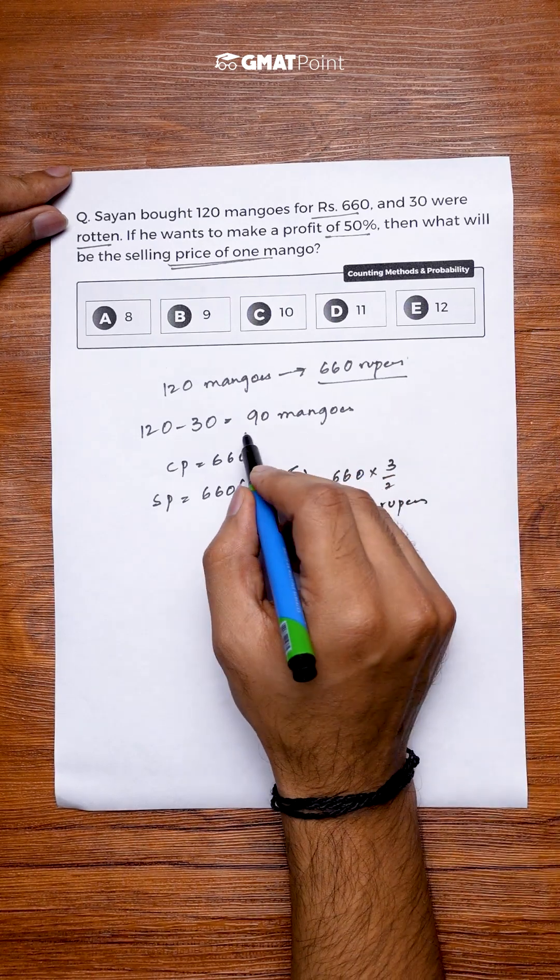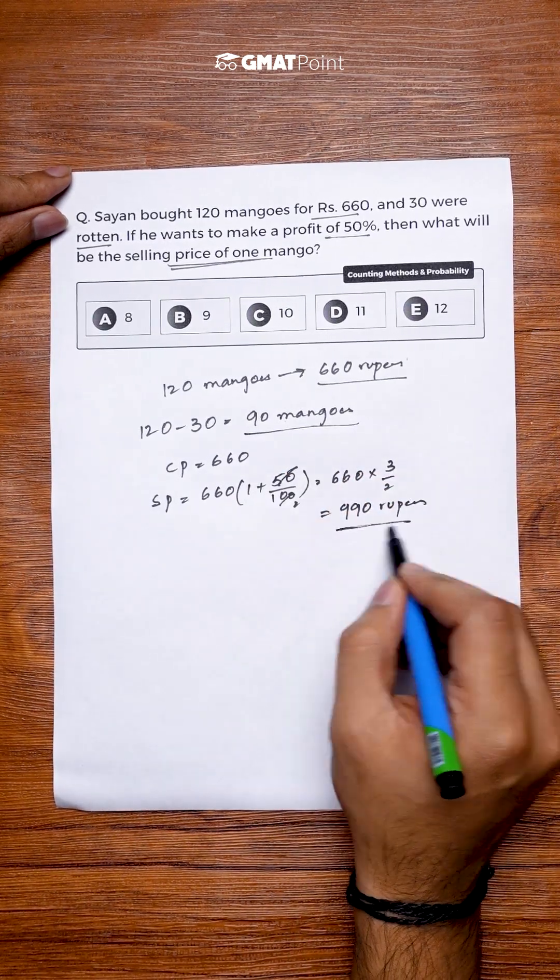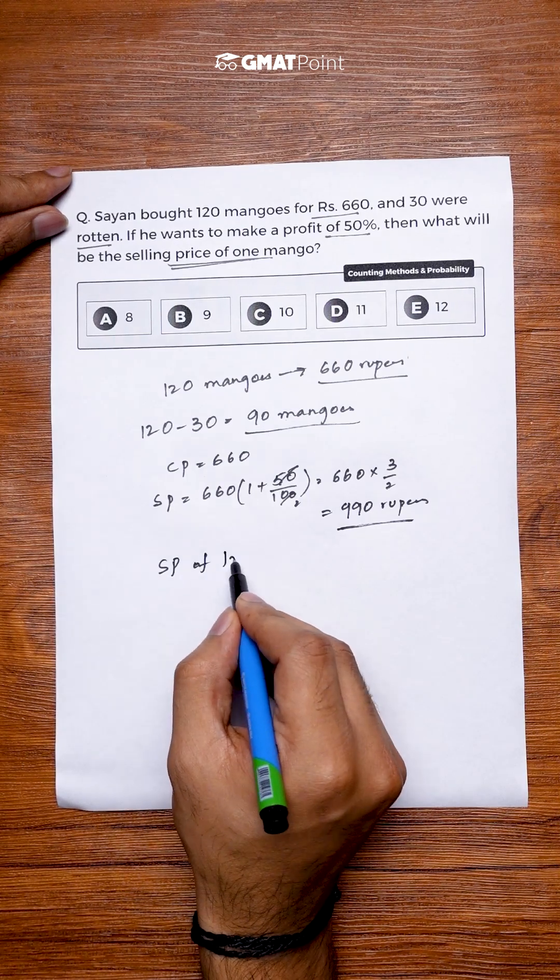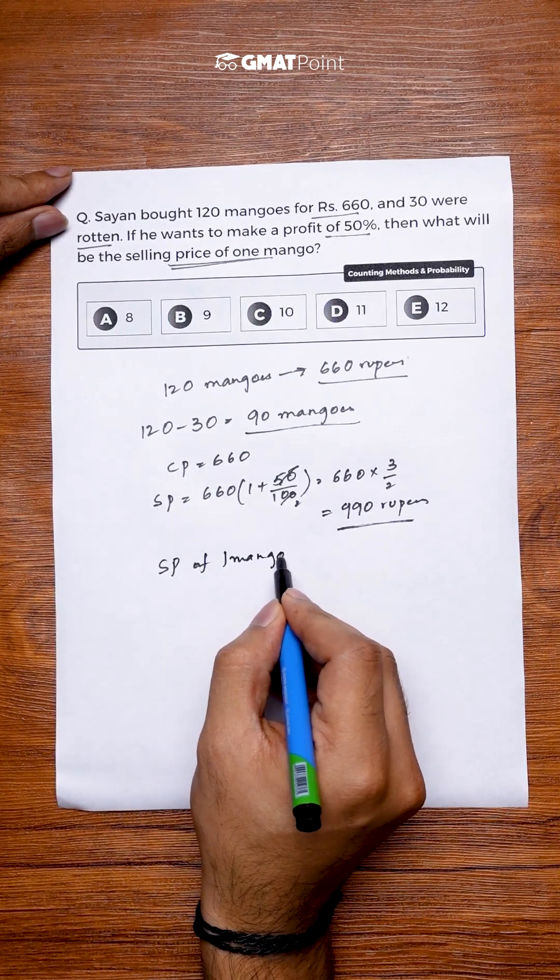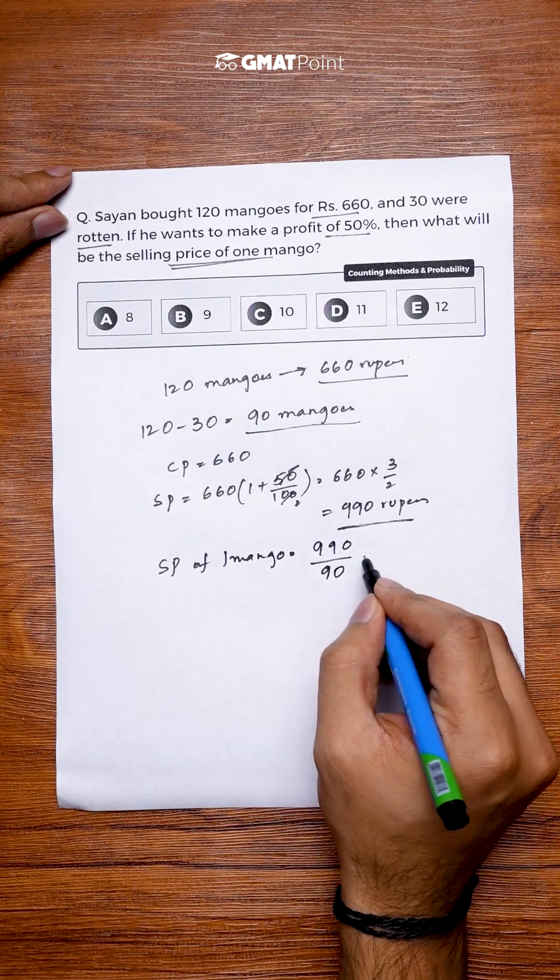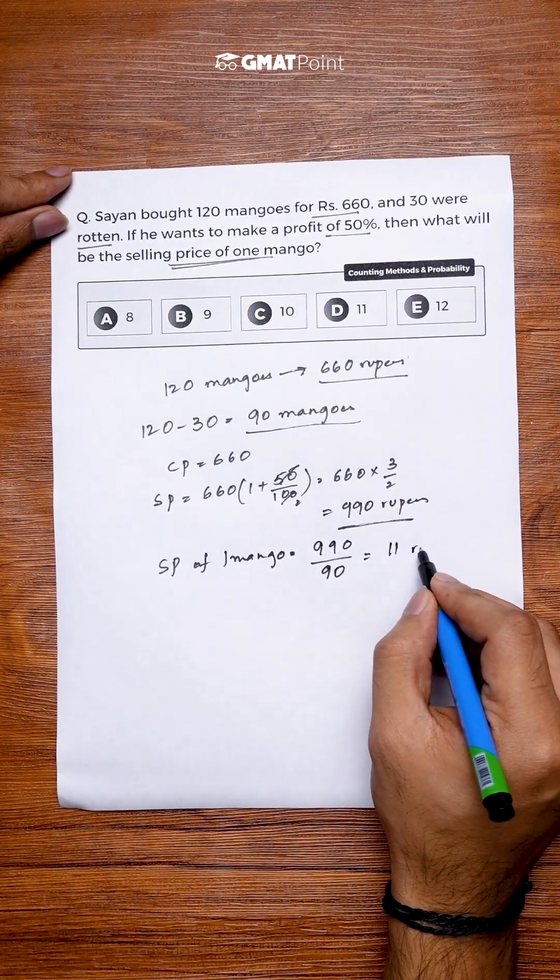So Sayan has 90 mangoes and he is selling them for 990 rupees. So the selling price of one mango can be calculated as 990 divided by 90 mangoes which is equal to 11 rupees.